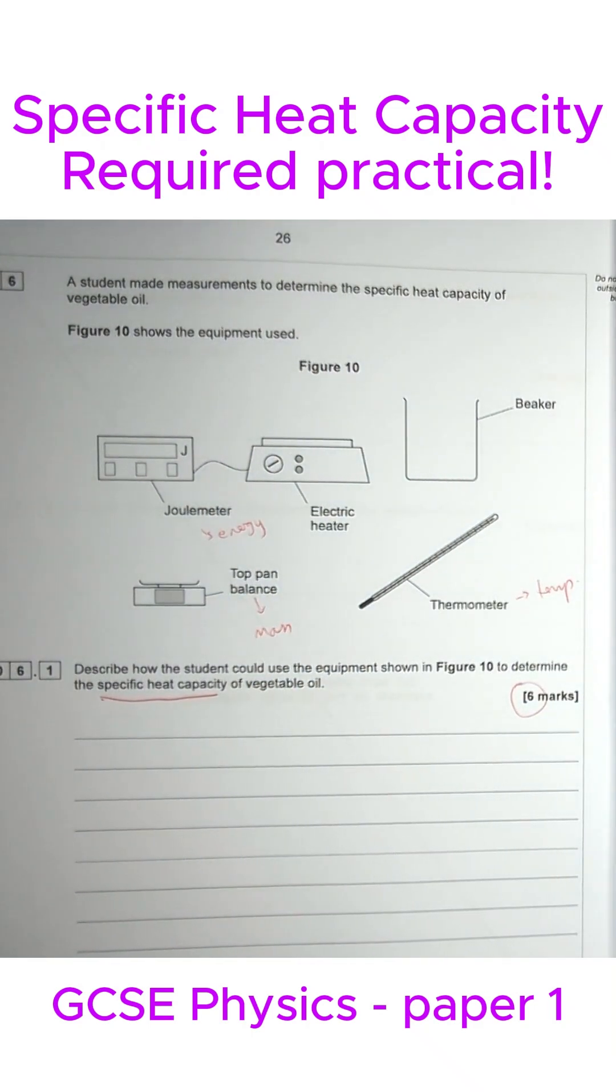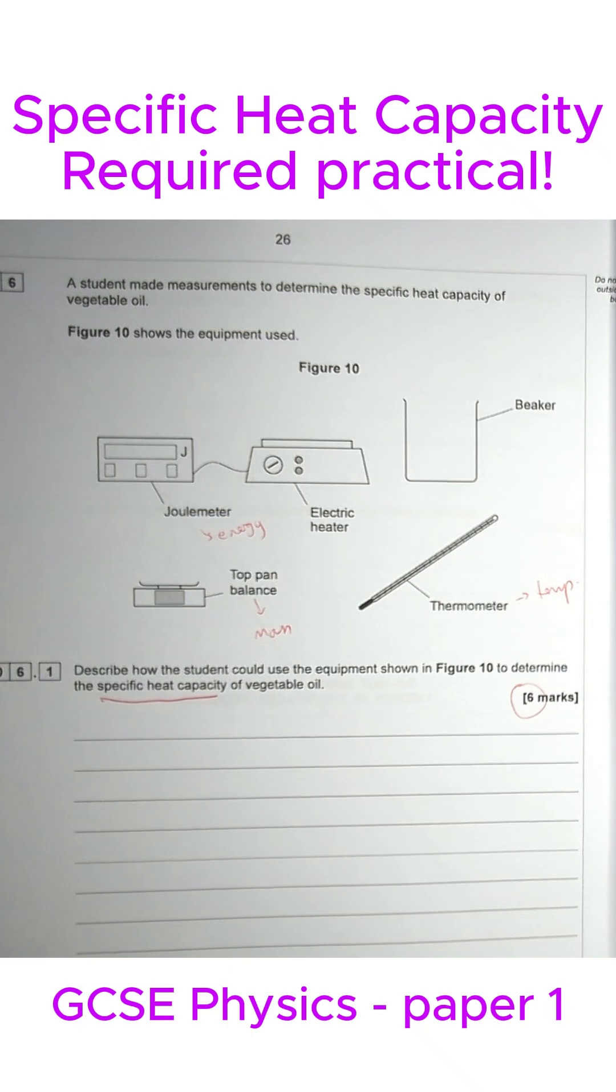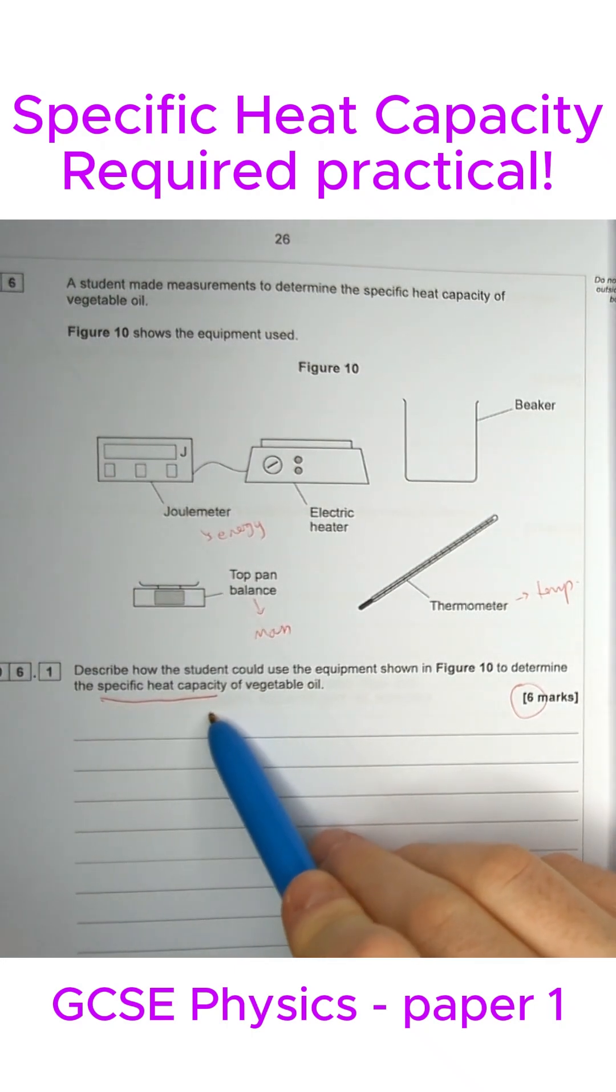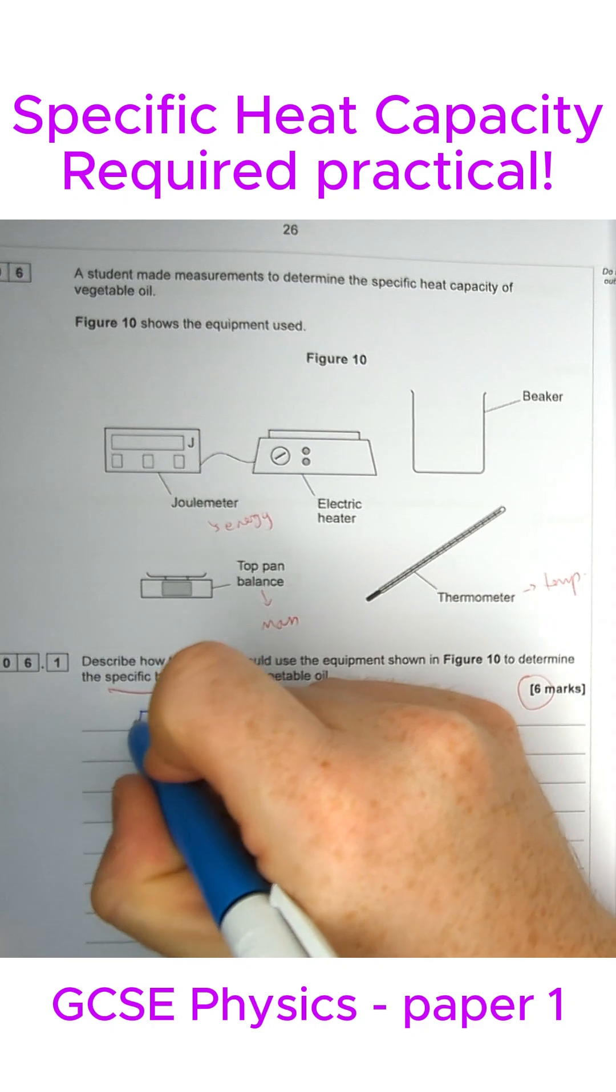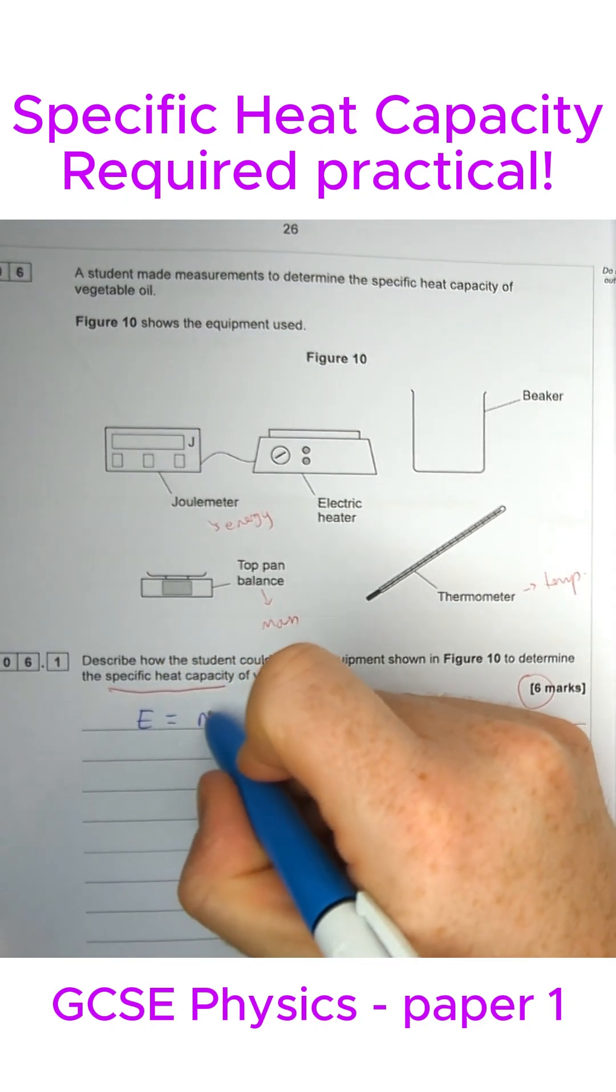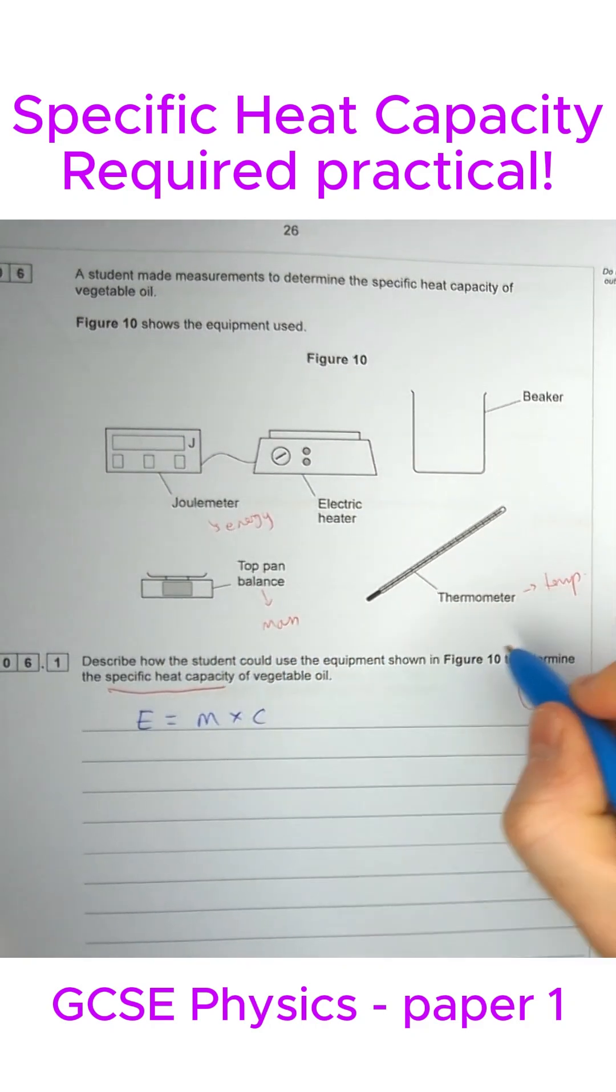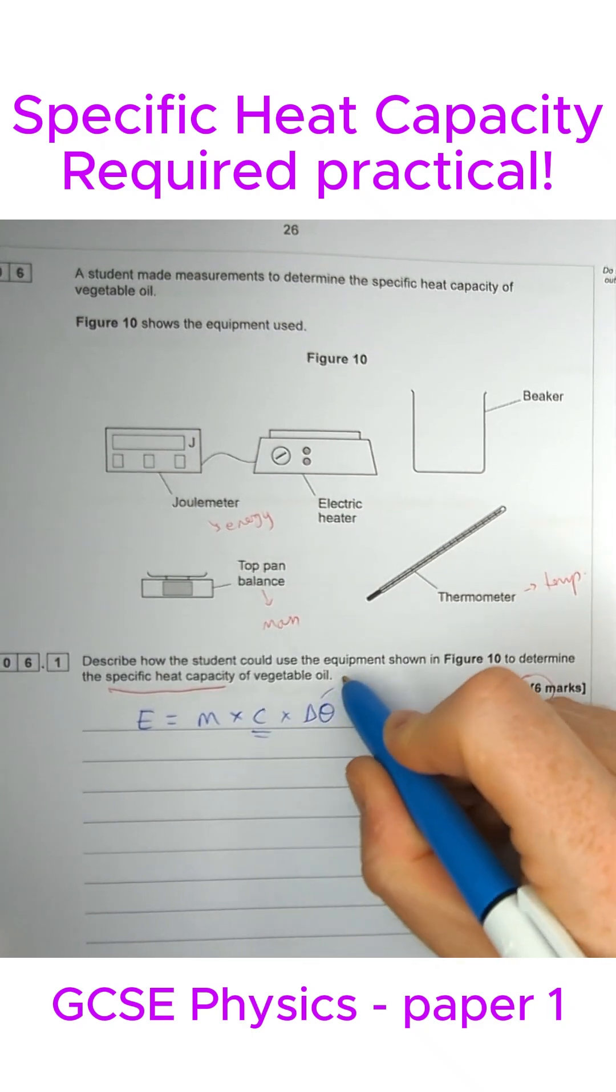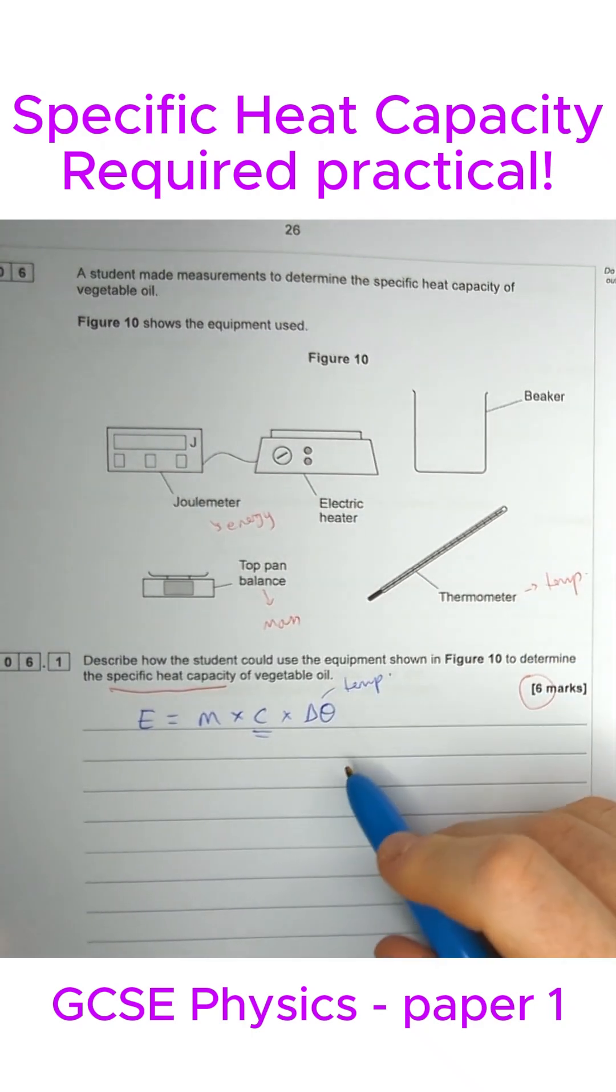As you might be able to guess, a joule meter measures energy, so we need to keep talking about those three things regularly. It helps with this question that we've also got an equation on our equation sheet with specific heat capacity in it. Energy equals mass times specific heat capacity times temperature change, which we use this symbol for.